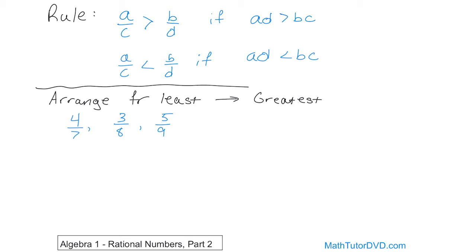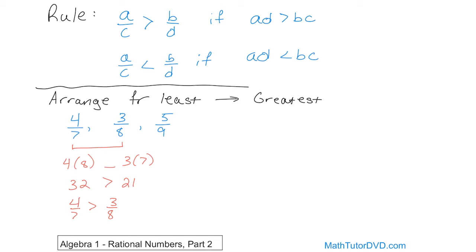Let's first compare just 4 sevenths and 3 eighths. You cross multiply: 4 times 8 on one side, and 3 times 7 on the other. 4 times 8 is 32, and 3 times 7 is 21. Because 32 is bigger than 21, the first fraction is bigger than the second. So 4 sevenths is greater than 3 eighths. You multiply as an X — this direction gives you one number, the other direction gives another — and the arrow points toward the bigger fraction.